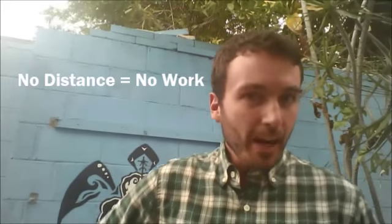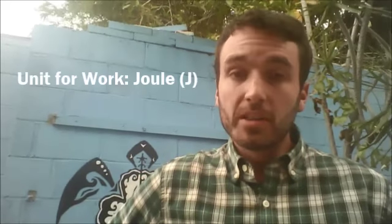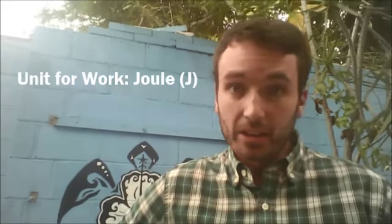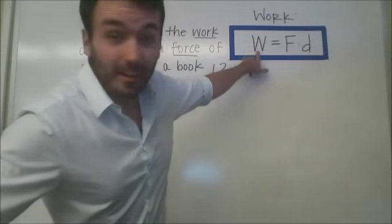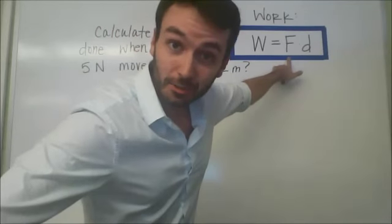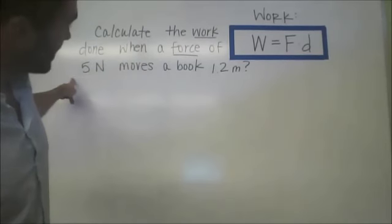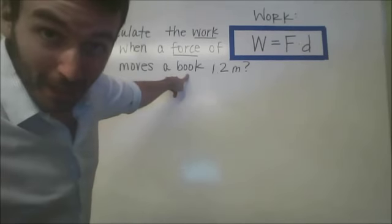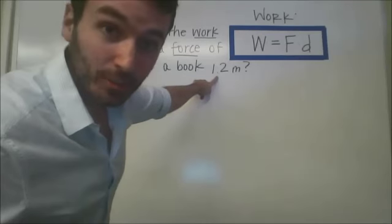When we bring this back to the classroom, the unit you'll be using for work is going to be something called the joule, so make sure you keep that in mind for every calculation you do. In order to find work, all you need to do is take force times distance. Let's read our problem: calculate the work done when a force of 5 newtons moves a book 1.2 meters. We know we have a force of 5 newtons and a distance of 1.2 meters.